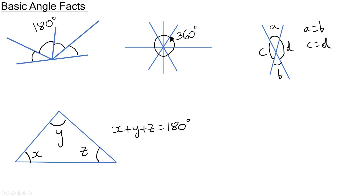These are our basic angle facts. Angles in a straight line add up to 180 degrees. Angles around a point add up to 360 degrees. If I have two lines that cross, the vertically opposite angles formed are equal. And finally, angles in a triangle add up to 180 degrees. If we know these properties, we can solve a lot of different problems to do with angles.